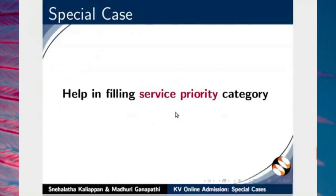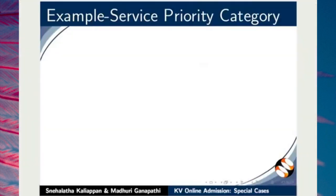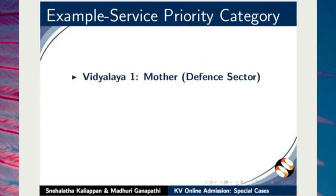Next, I will demonstrate how to use help in filling service priority category. Here, I have opened the choice of school section of an online application form. For demonstration, I have taken the following examples to fill the choice of schools section for a child. For Vidyalaya 1, we have chosen service priority of mother, who is an employee of the defense sector.